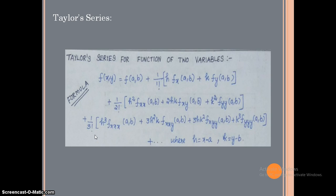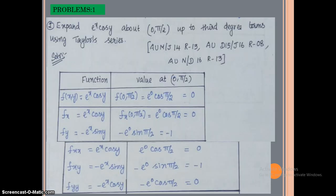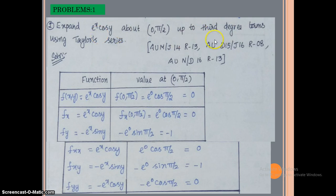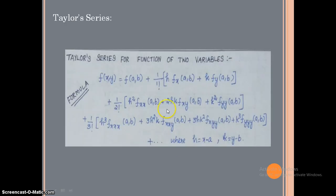Now the first problem: expand e^x·cos y about (0, π/2) up to third-degree terms using Taylor series. We need to find terms up to the (1/3!) group, meaning up to third-degree formulas.